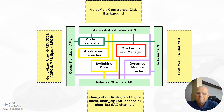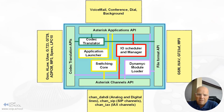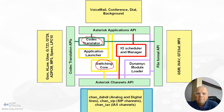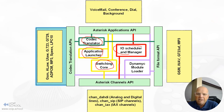This is the Asterisk architecture. The most important part is the switching core — this is the place where everything happens. We also have other parts like the codec translator, capable of transcoding between different audio streams, the application launcher for controlling applications, and the I/O scheduler and manager.